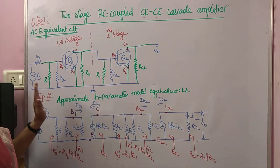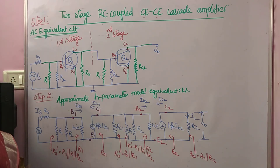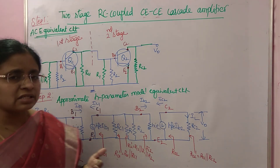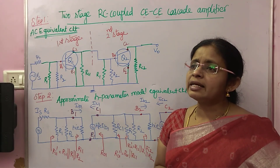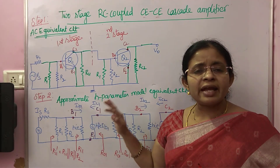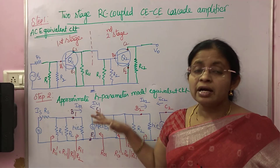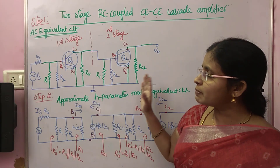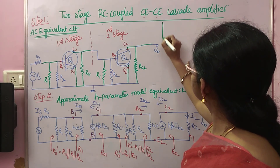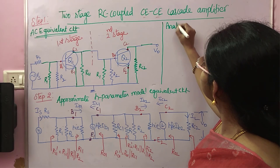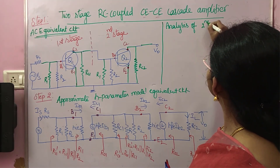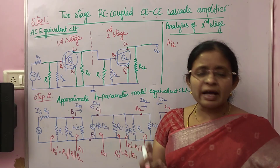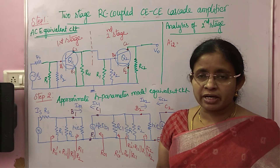Now from this equivalent circuit we are going to analyze the two-stage amplifier. If the circuit consists of two stages, you want to find Av, Ai, and Ri of individual stages and also for the entire two-stage amplifier. As mentioned in the last video, the analysis must start from the second stage. Now we will start with Ai2, going through the table and the concept of the approximate H-parameter model.